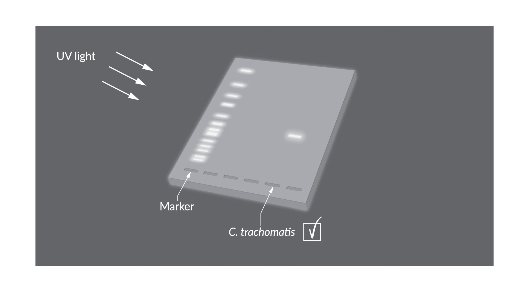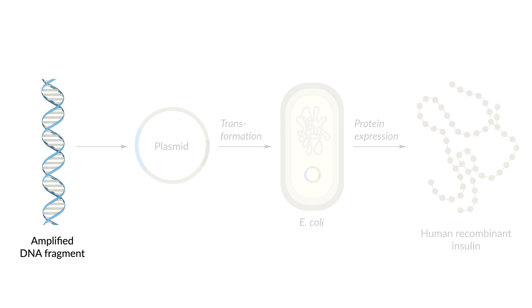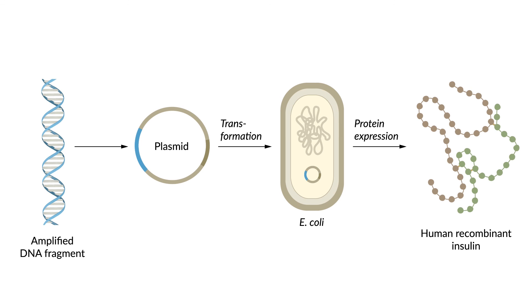Alternatively, the DNA can be further used and transferred, for example, into a bacterial genome. This genetic engineering method is used to produce therapeutic proteins like recombinant human insulin.